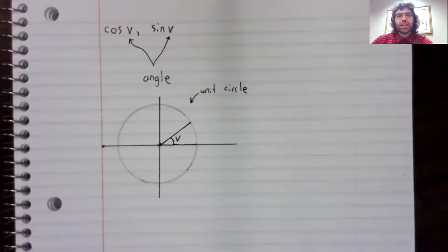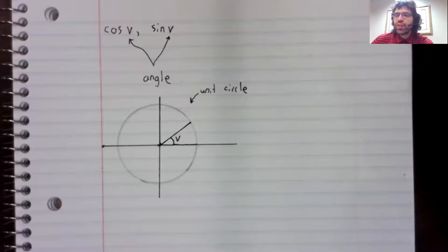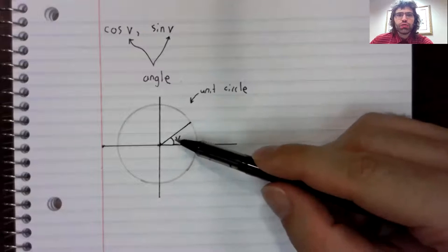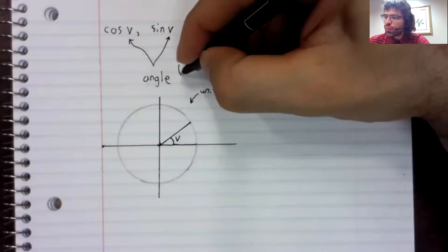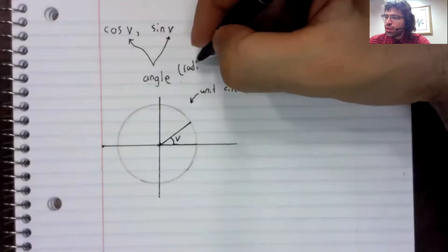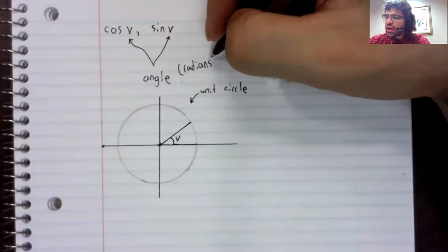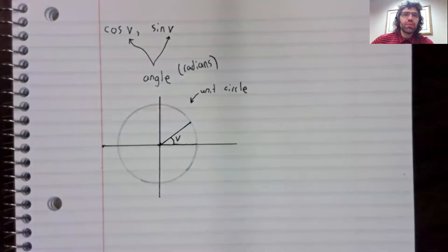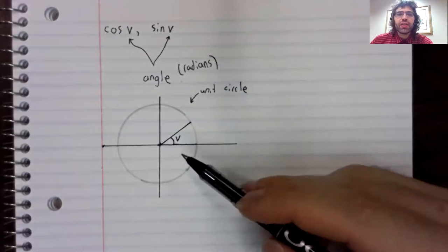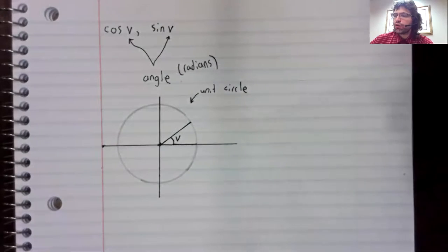If we create an angle like that, v could theoretically be measured however we want. But again, in this class, everything's being measured in radians. If we create an angle of v radians,